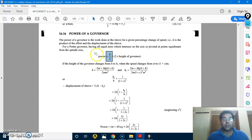So power is effort of the governor into displacement of sleeve. Now you can explain displacement of sleeve—this is the displacement of sleeve you can explain.